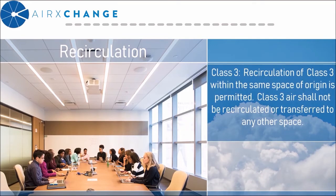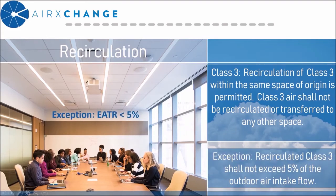For Class 3, recirculation within the space of origin is permitted, and Class 3 air shall not be transferred to any other space. However, there is an exception when using an energy recovery device: recirculated Class 3 air shall not exceed 5% of the outdoor air intake flow, which means your EATR must be limited to 5% or below.